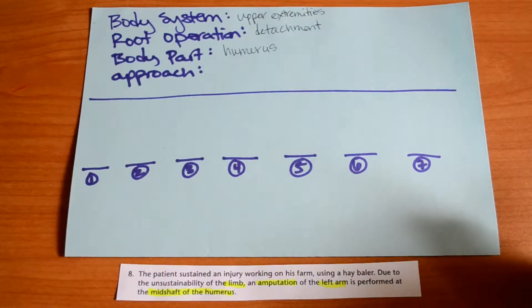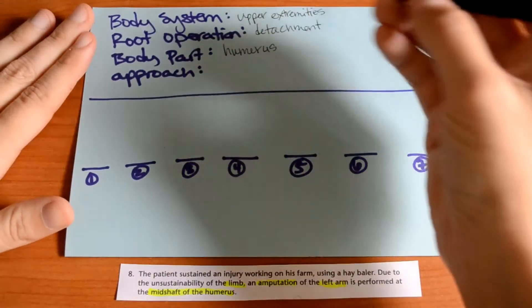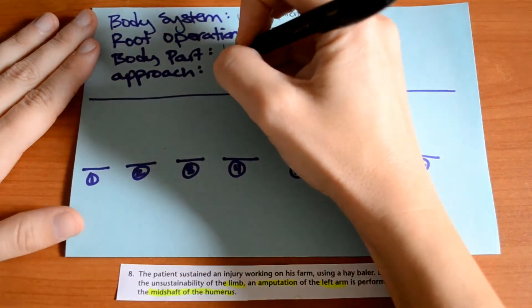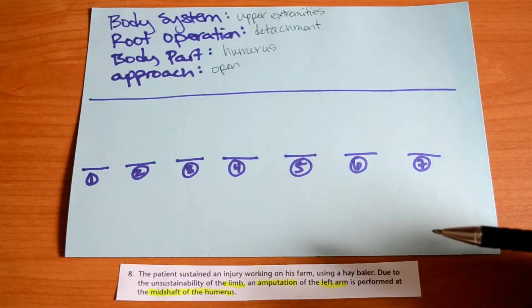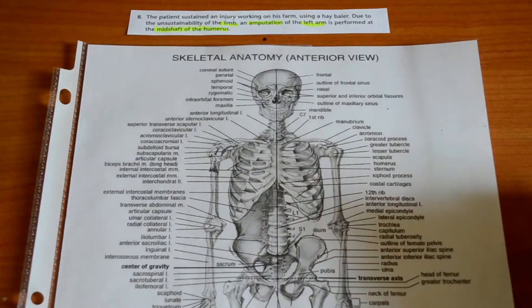They are cutting all the way through the entire limb, so you can see with your eyes every single body part on the way, so it is open. And it's a very large incision, clearly. And then we can go a little bit further and figure out what type of amputation it was. So we know it's the left arm.